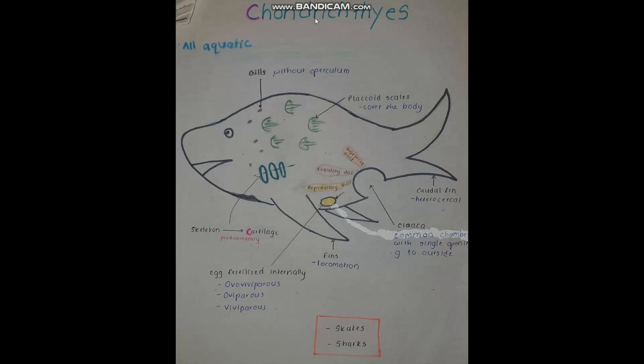The first point is all the Chondrichthyes are aquatic. I have written it in blue color to highlight the aquatic habitat.